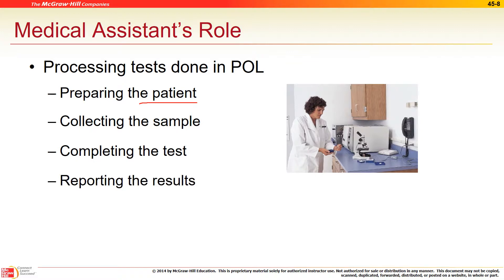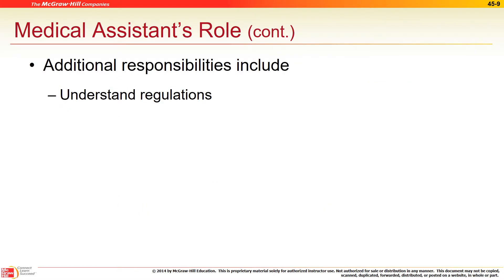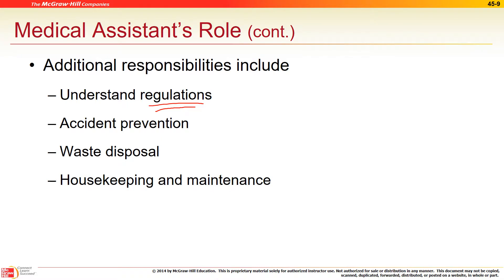Can you report results to the patient as an MA? No. Routine results — sometimes you can, but most of the time you need to refer them to the physician so you don't give misleading or wrong information. Additional regulations include HIPAA compliance: if you're sending samples out, consider what information can be attached, what needs to be de-identified, and whether you're using codes for specimens.